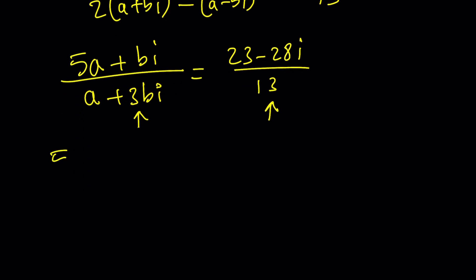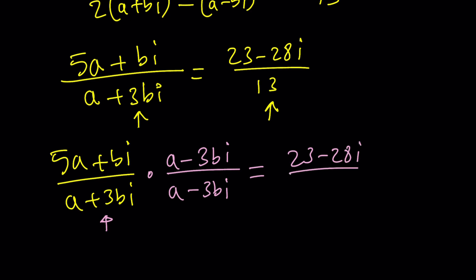We take the left hand side and multiply by its conjugate. And you decide by looking at the denominator a minus 3bi and a minus 3bi. It should equal the right hand side.